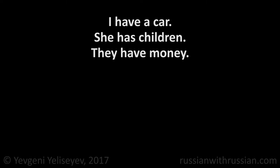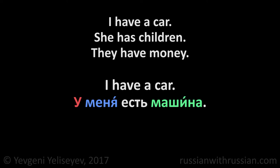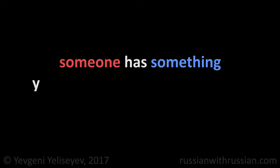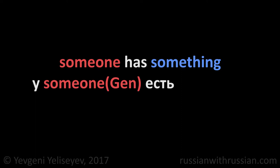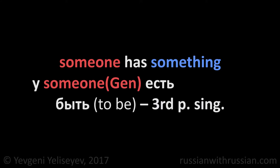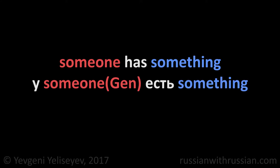But to say 'I have a car,' 'she has children,' 'they have money,' we prefer to make sentences in a different way. In other words, we rarely use the verb иметь in the present tense. For example, 'I have a car' in Russian is у меня есть машина — it literally means 'at me is car.' The general rule is: to express possession of something, use the preposition у, put the name of the owner in the genitive case, add the word есть — which is the third person singular of the verb быть, 'to be' — and add the name of the object that someone has.